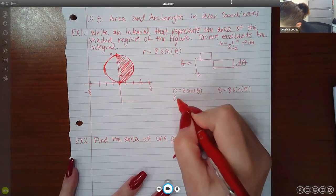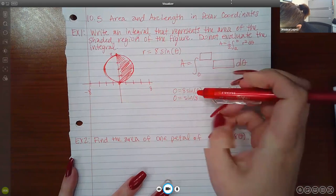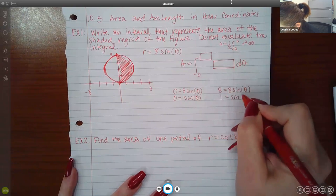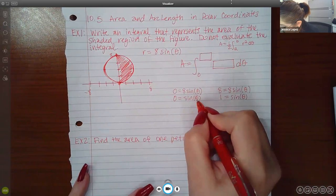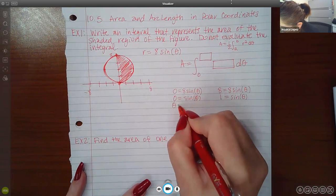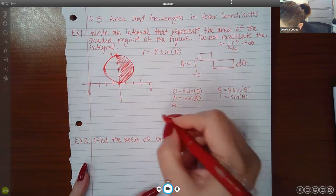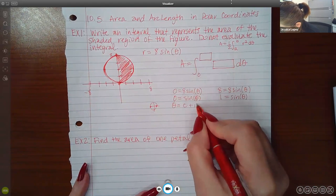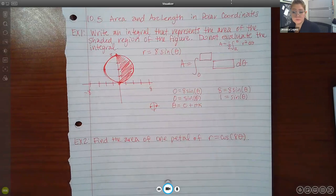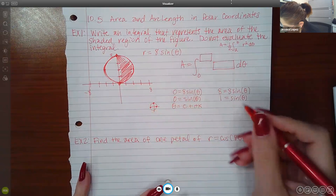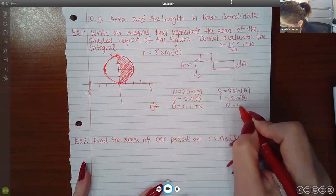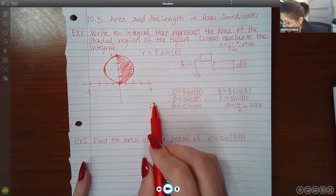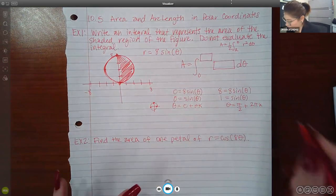In order for us to get this point right here, that would mean that our radius was going to need to be zero. We're basically solving this equation for theta so that we can find the bounds for theta. Since this is the beginning of the shaded region, and that's the end of the shaded region, the radius is actually equal to eight. So I'm going to set eight equal to eight sine of theta.